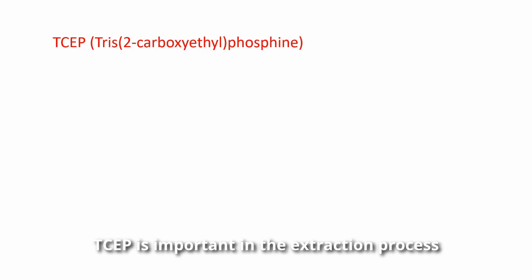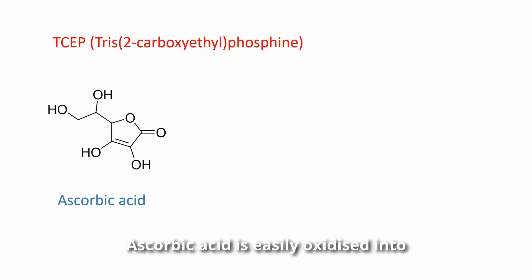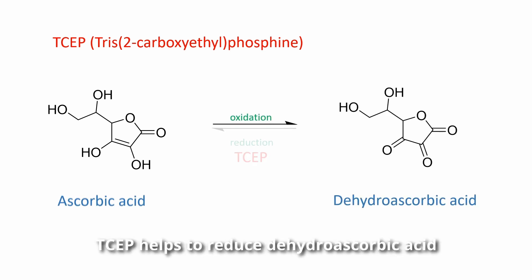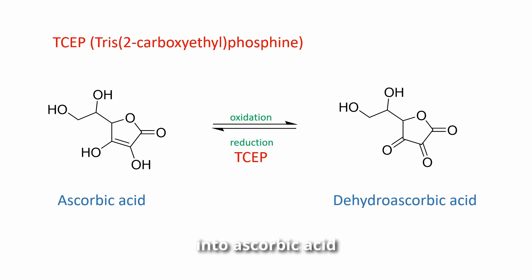TCEP is important in the extraction process. Ascorbic acid is easily oxidized into dehydroascorbic acid. TCEP helps to reduce dehydroascorbic acid back into ascorbic acid.